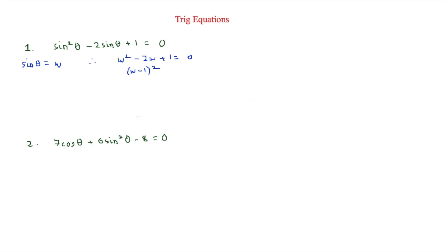Now, therefore, we can substitute the w for the sin theta. So therefore, we can get sin theta minus 1 is equal to 0. Therefore, sin theta is equal to 1.